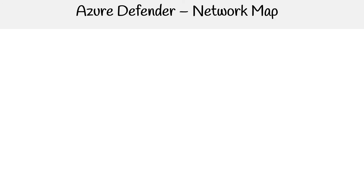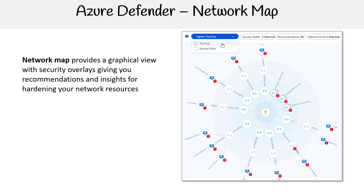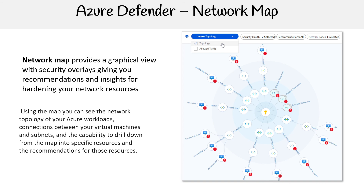To highlight the network map, because this one is really cool — it provides a graphical view with security overlays, giving you recommendations and insights for hardening your network resources. Using the map, you can see the network topology of your Azure workloads, connections between your virtual machines and subnets, and the ability to drill down from the map into a specific resource and its recommendations.